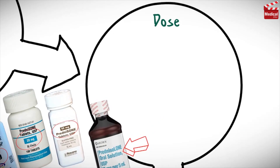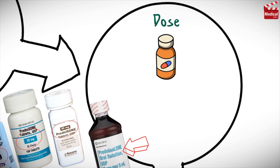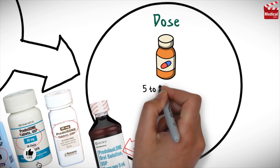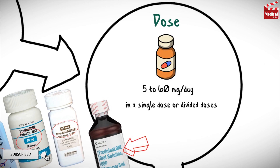Dosages of corticosteroids are variable and should be individualized according to the disease being treated and the response of the patient. The usual dose of prednisone for adults is 5 to 60mg per day, in a single dose or divided doses.